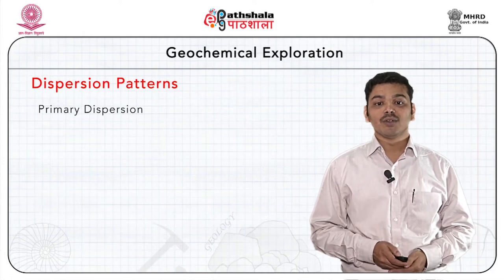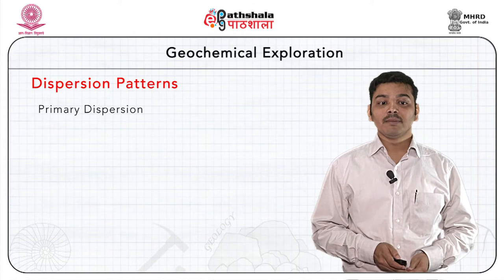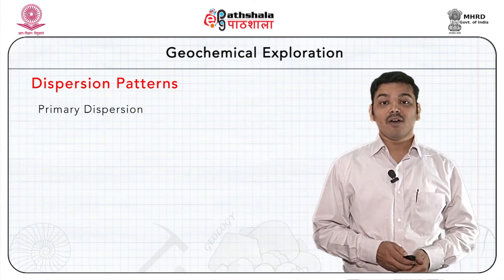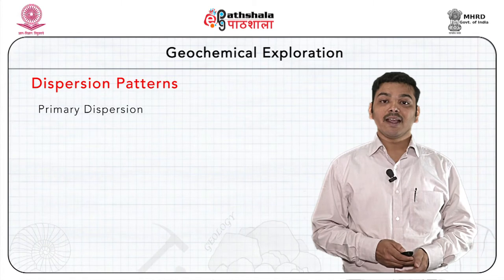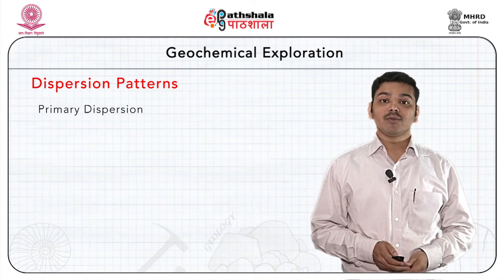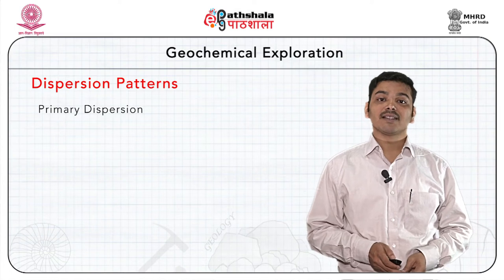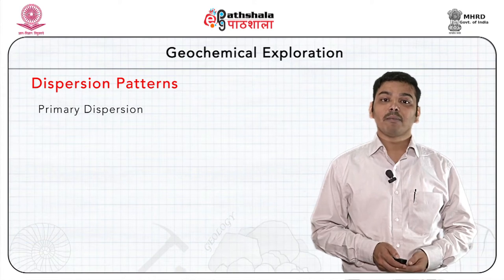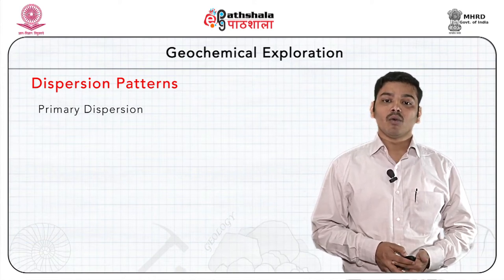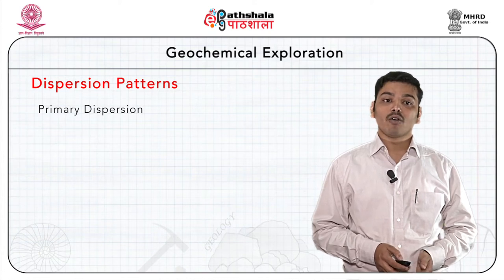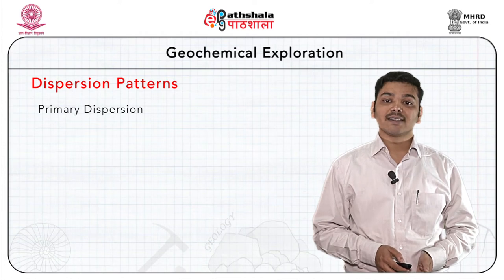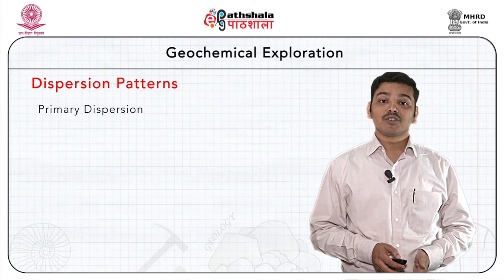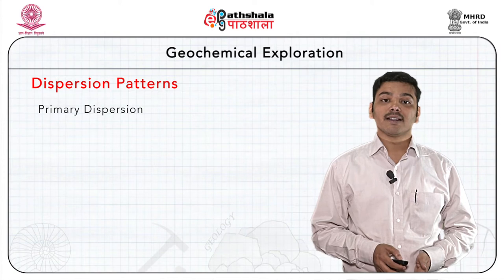Generally, some elements are present in abundance and are utilized as major constituents in the most common rock-forming minerals. These major elements include oxygen, silicon, aluminum, iron, calcium, sodium, potassium, magnesium and titanium in order of their abundance. Rare elements occur as main constituents only in some accessory mineral phases like zircon and monazite. The remaining elements get partly accommodated in one or more of the common minerals by occupying a position in the crystal lattice that is generally filled by one of the major elements. This substitution is only possible under restricted conditions.